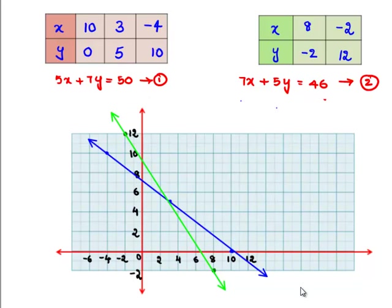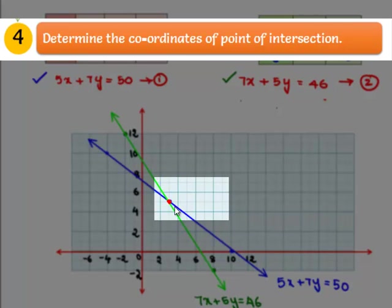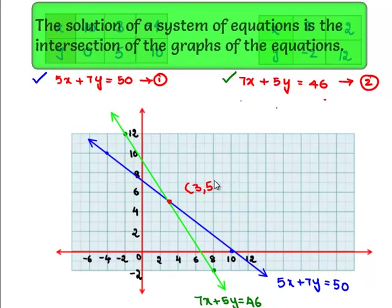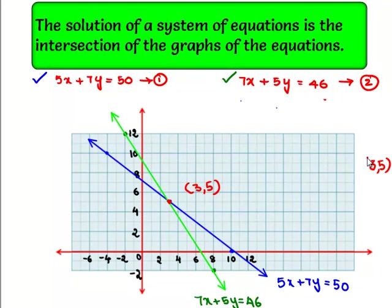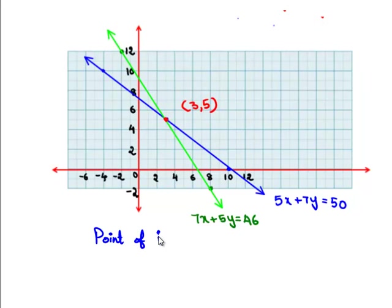After joining the blue points we get the straight line 5x plus 7y equals 50, and after joining the green points we get the straight line 7x plus 5y equals 46. Both straight lines meet at a common point — the point of intersection — which is (3, 5).